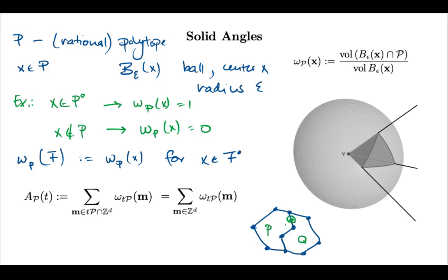When we started talking about Ehrhart polynomials, we said that sometimes we need to use inclusion-exclusion. So we're adding things, but then have to subtract what's happening on the intersection. And what we're saying here, as long as this intersection is lower dimensional, we don't have to subtract anything.